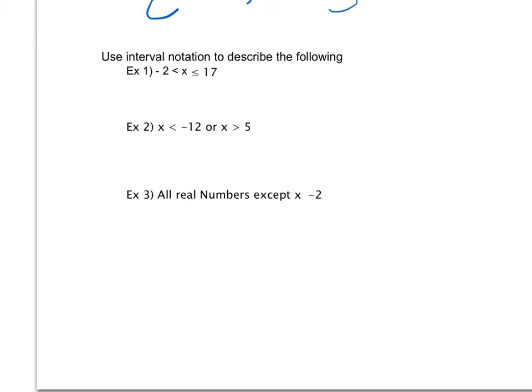So on the first one, I want x values between negative 2 and 17, so how do I show that? I show that by saying I start at negative 2, I use a parentheses because it's less than, I go up to 17, I use a bracket. So do you see how if this had been a parentheses, it could look like a point?